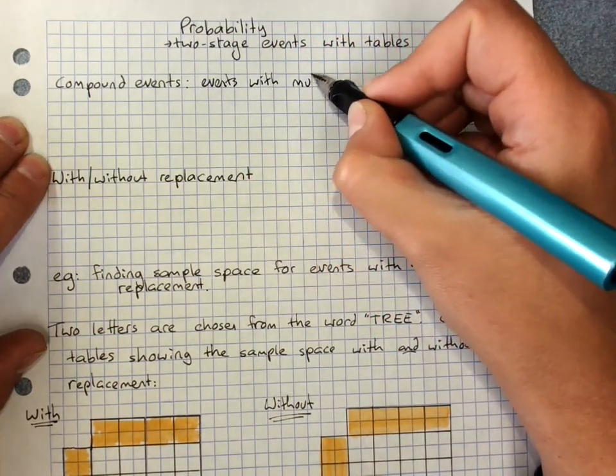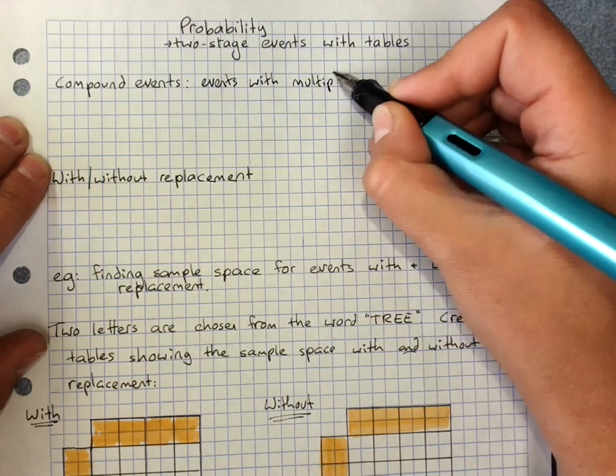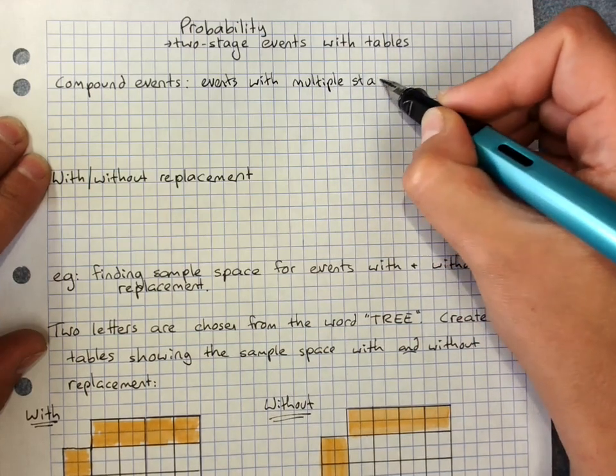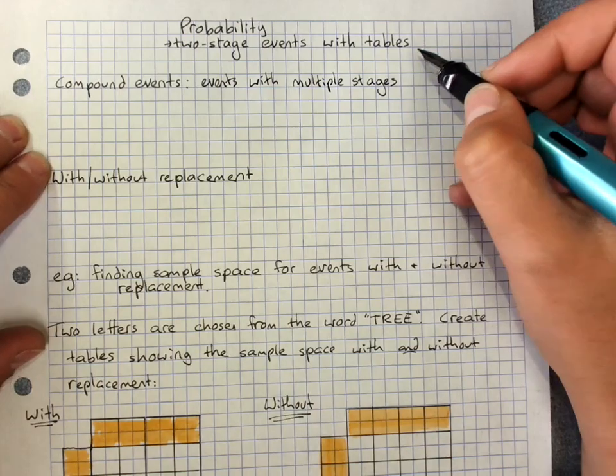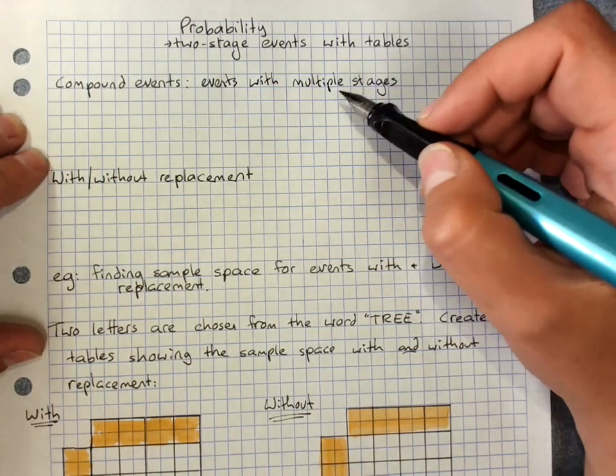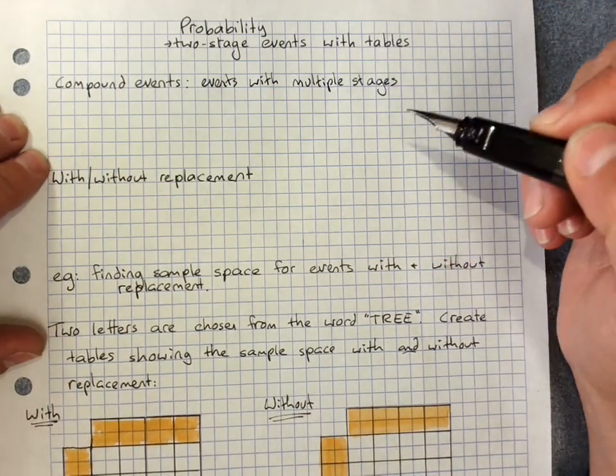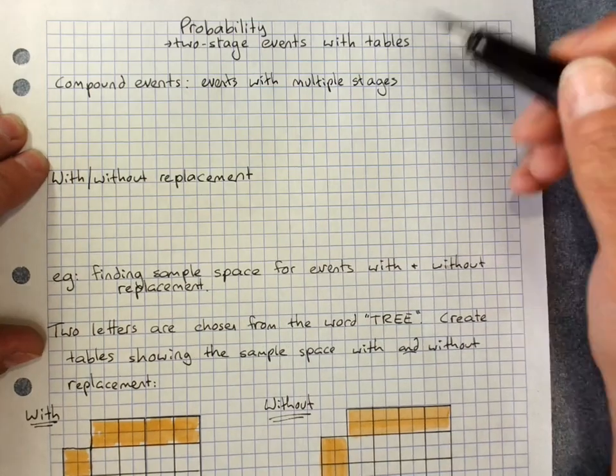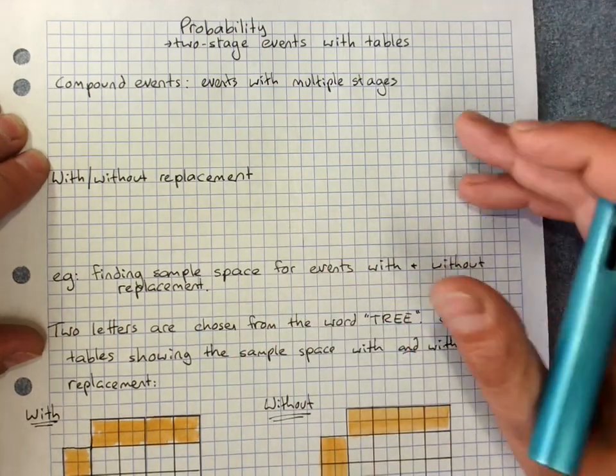Compound events are events with multiple stages. We need to be able to look at the probability involved in these. We often use a table to show the sample space, and that's what this one is about.